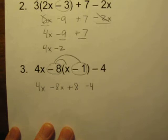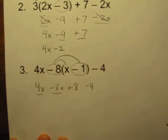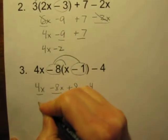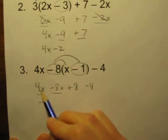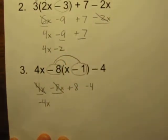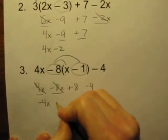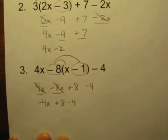Now we've gotten rid of the parentheses by distributing. Now let's just combine like terms. Let's start with the x terms. There's 4x minus 8x which combine to make negative 4x. So we are done with those. Let's rewrite the remaining terms: plus 8 minus 4.